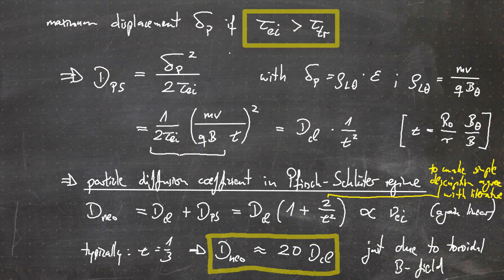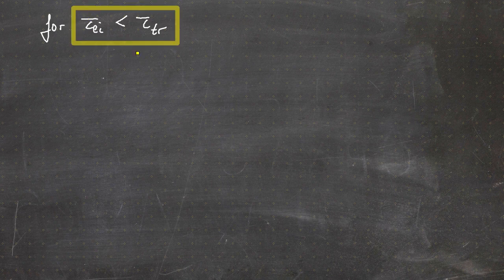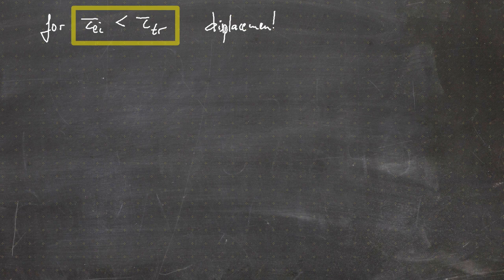At the beginning we required that the collision time should be much larger than the transit time. What happens in the case of the collision time being smaller than the transit time? Then the displacement of the particle is reduced, which means that the diffusion coefficient is also reduced.